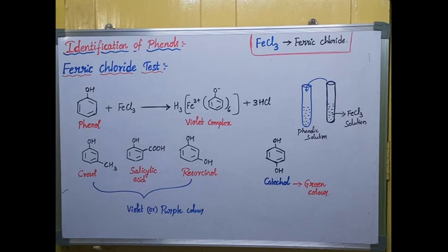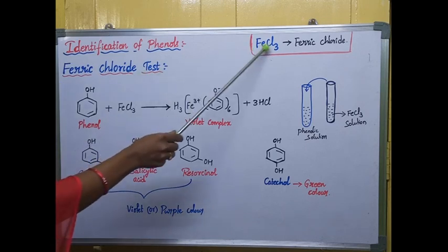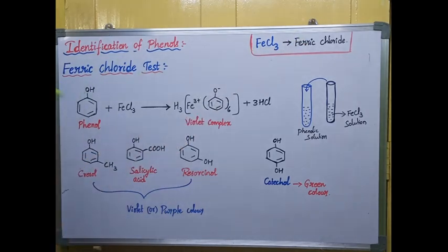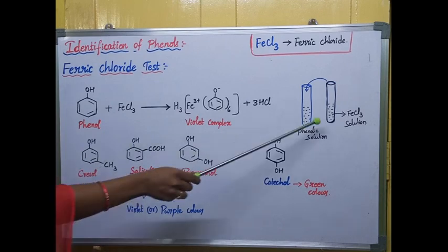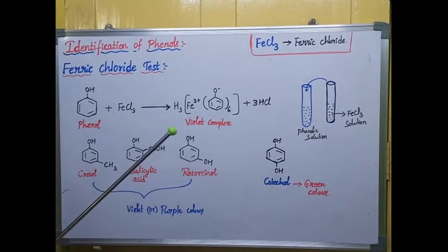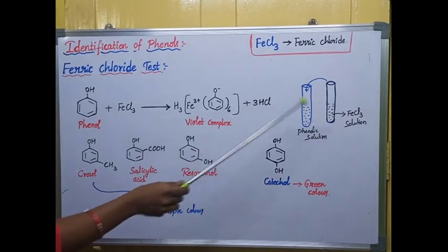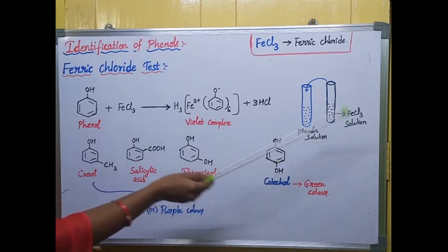That test is nothing but the ferric chloride test. The formula for ferric chloride is FeCl3. We will take ferric chloride and prepare the ferric chloride solution freshly — a freshly prepared ferric chloride solution should be used.